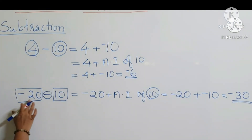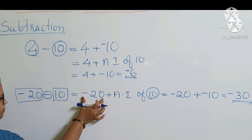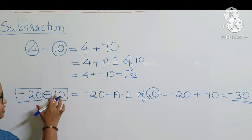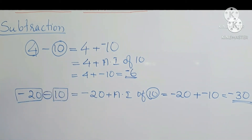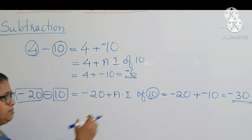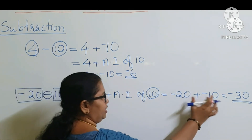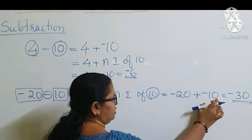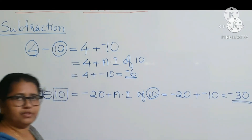So minus 20 minus 10 equals minus 20 plus additive inverse of 10, which is minus 20 plus minus 10. Both are negative integers, so we add them and place the same sign, giving minus 30.